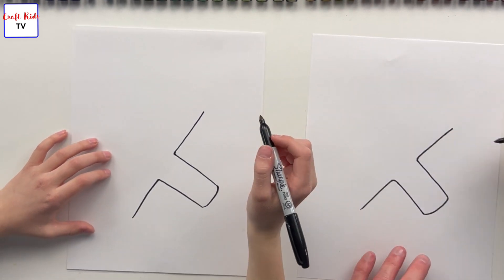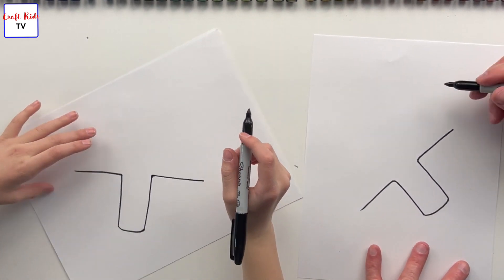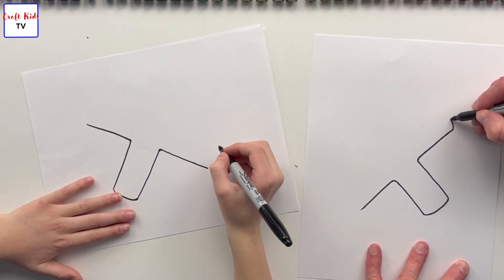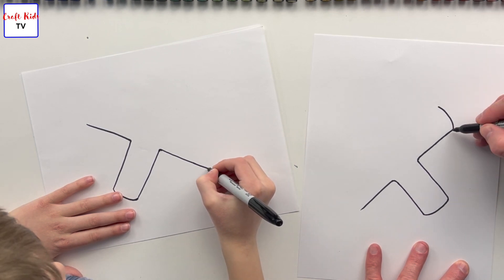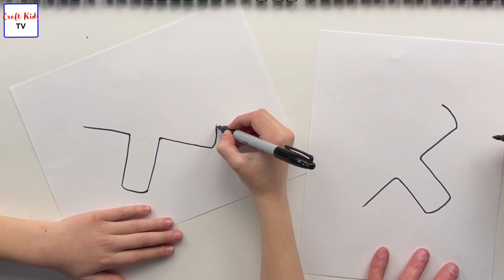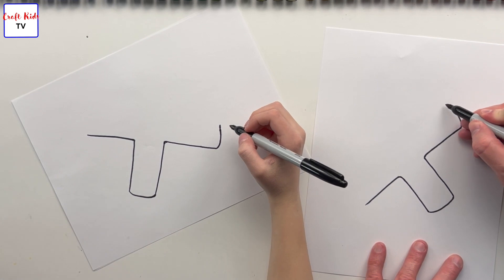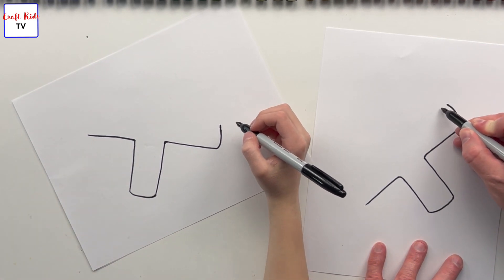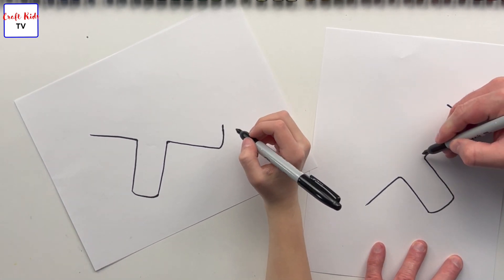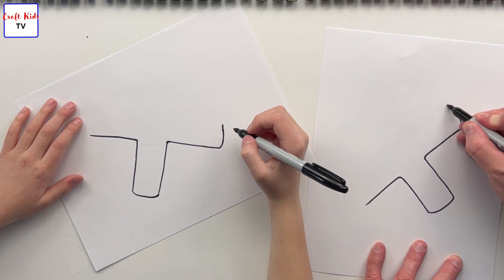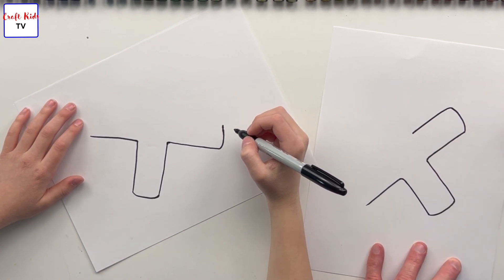Then once again we follow the same pattern - we're gonna curve this around about an inch. Good. Now we're gonna curve this down, we've already started the curve, we're gonna bring it down here where this line would be going through imaginarily, somewhere in there.